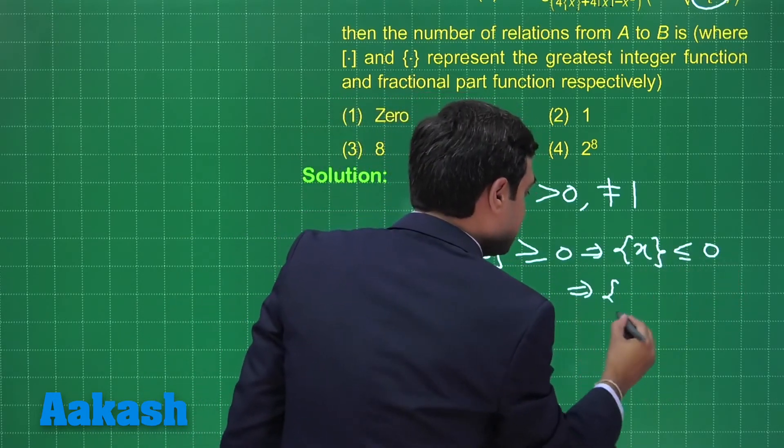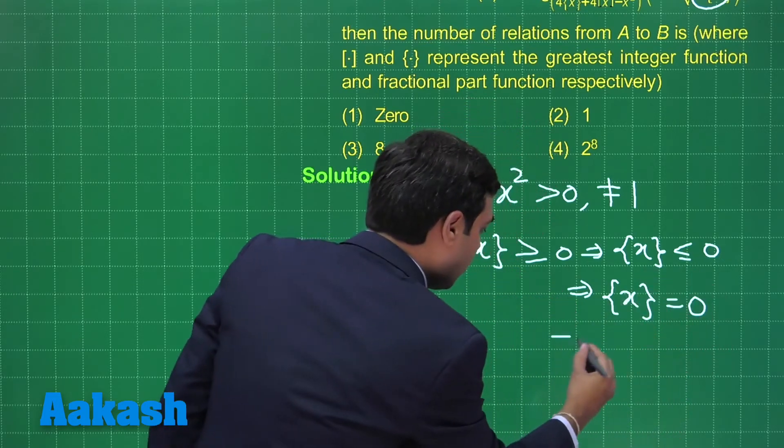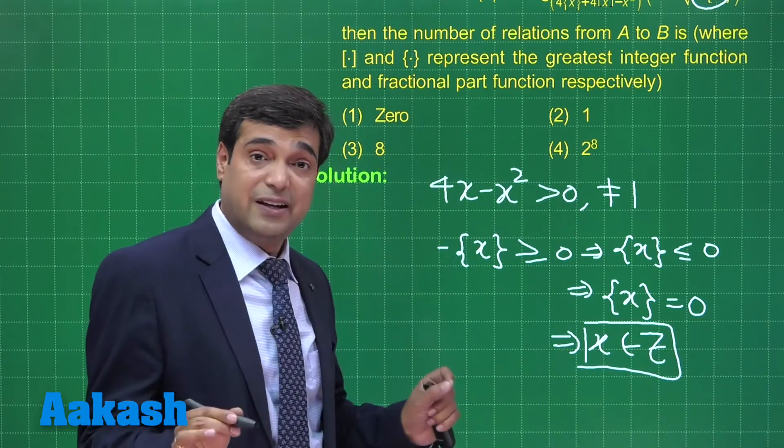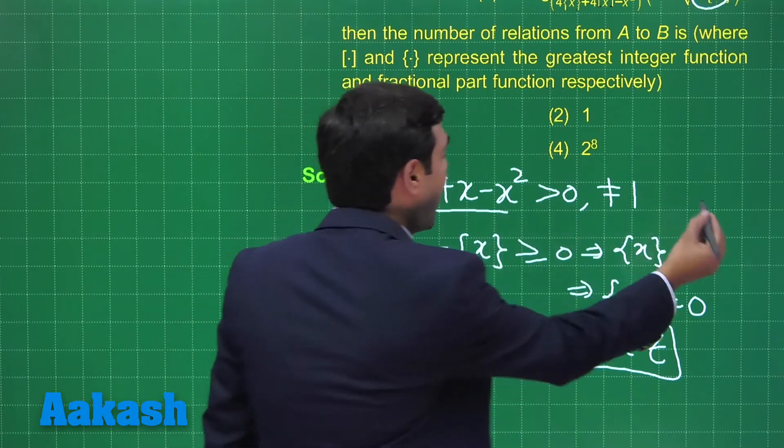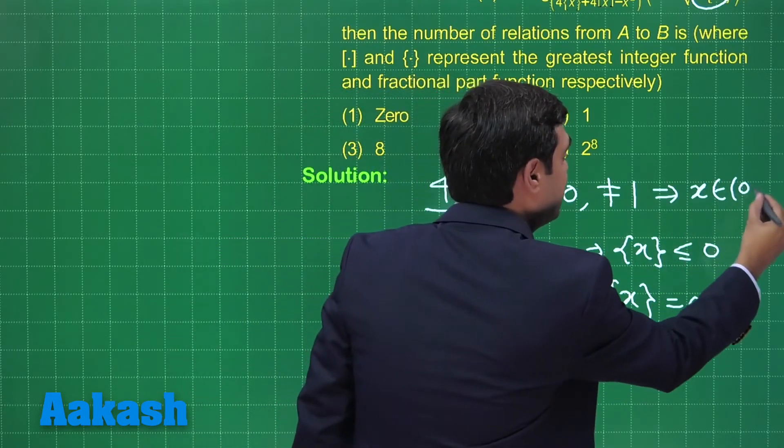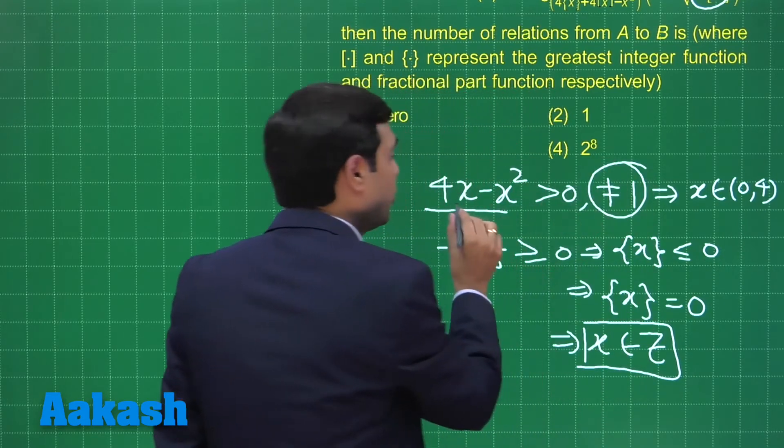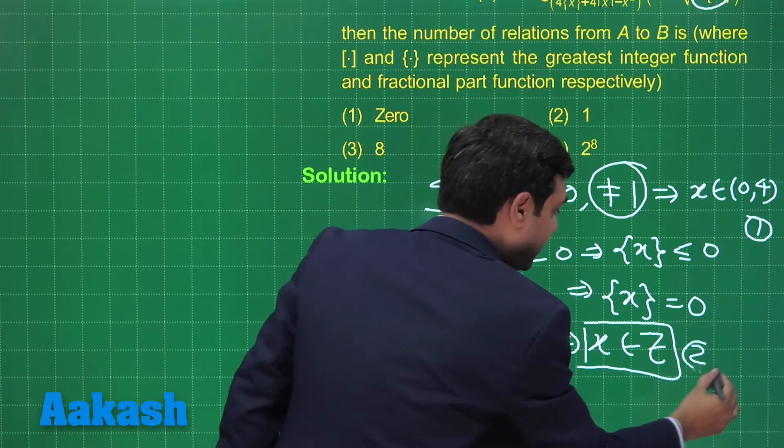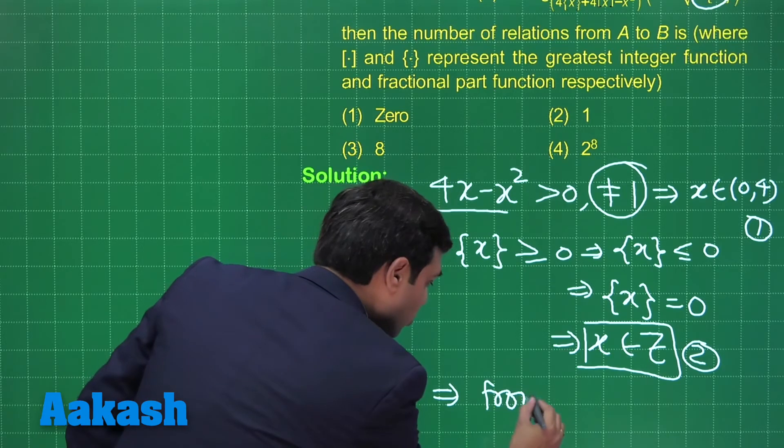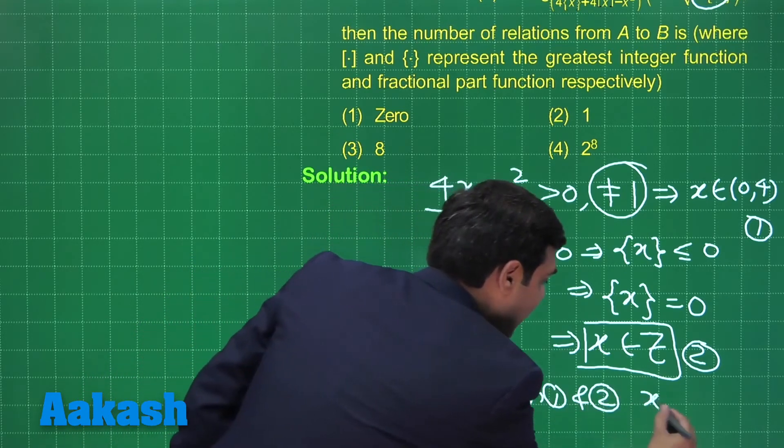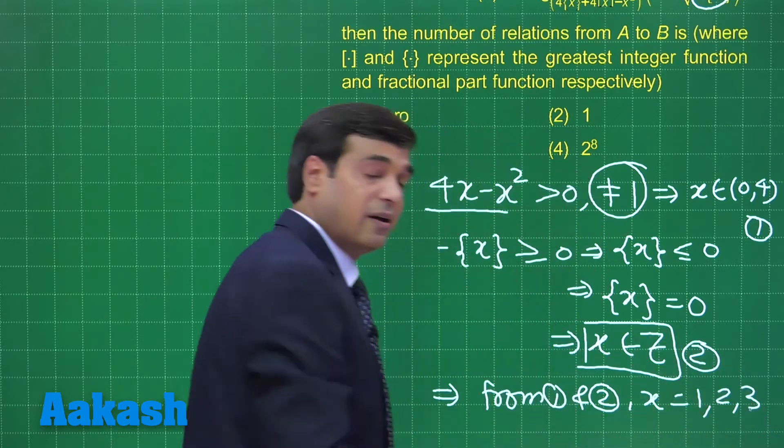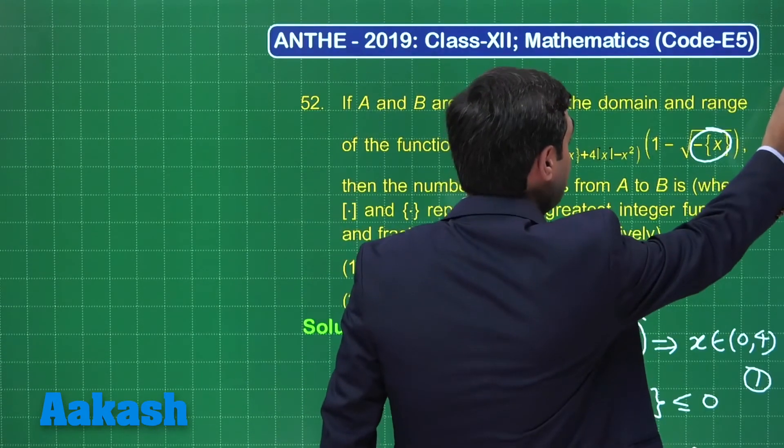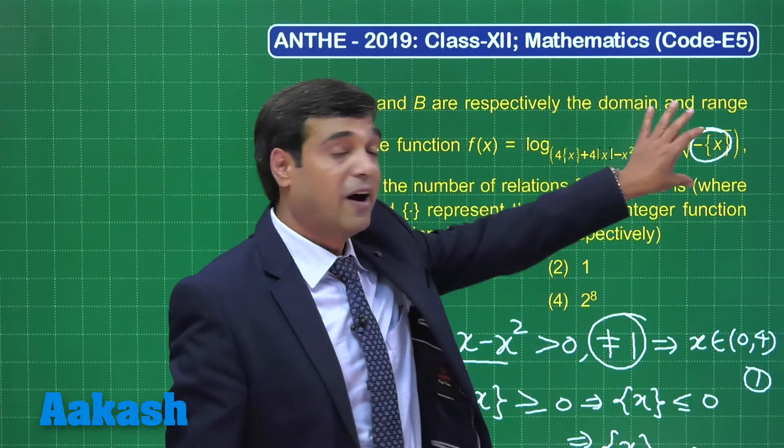When I get x is an integer, from here I had conclusion: x is in the interval zero to four, but excluding this portion. In considering an integer, so using this result as one, this result as two, we have from one and two: x is equal to one, two, three. I am sure this point is clear what I am getting. Yes.